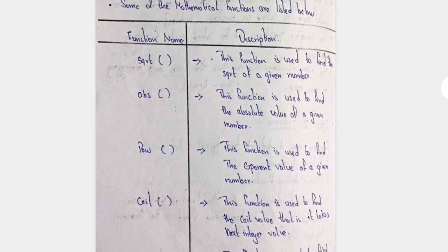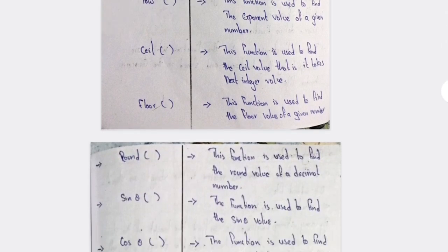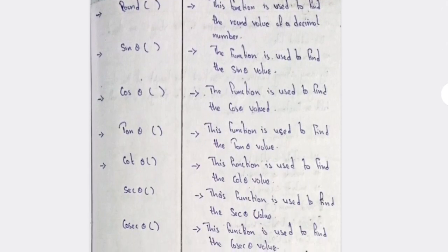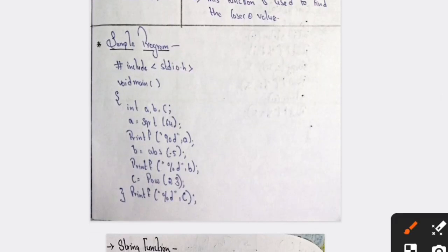In mathematical functions you will have: abs, which is the absolute value; pow, which is used to find the exponent value of a given number; and floor, which finds the floor of a given number. Remember sin, cos, and tan — those are not important for the program. Just remember the three: abs, pow, and floor.